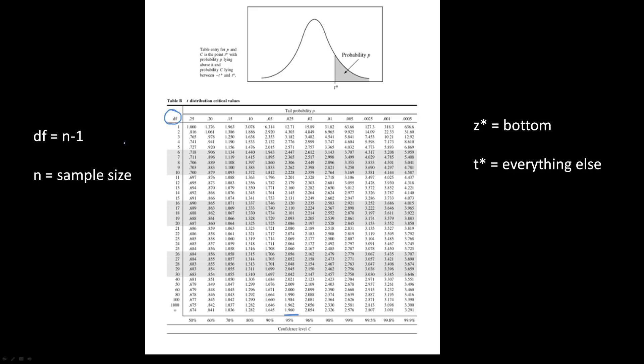So let's say that your sample size is 20 and you're trying to get a 95% level of confidence. So for that, you just go over to 19 and you look at the 95% confidence level column, and you can see that the value that you're going to be using for your T star is 2.093.